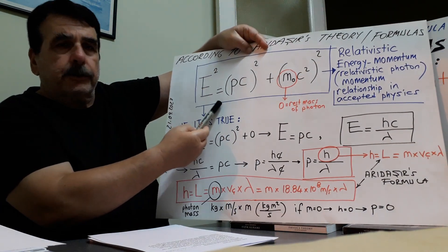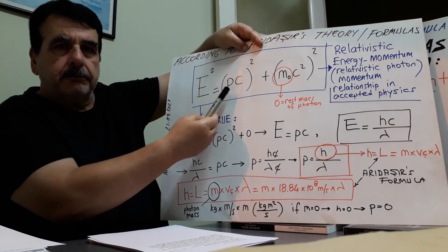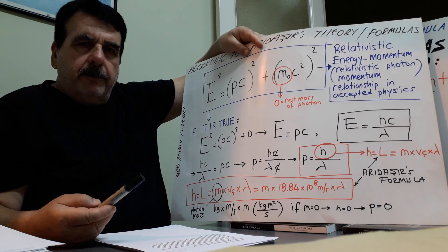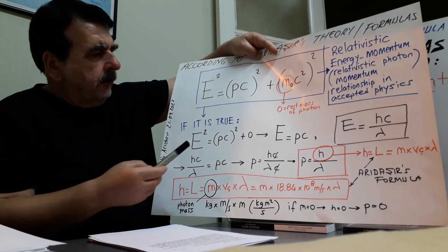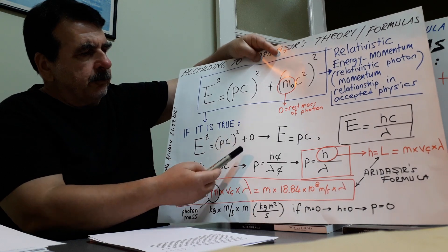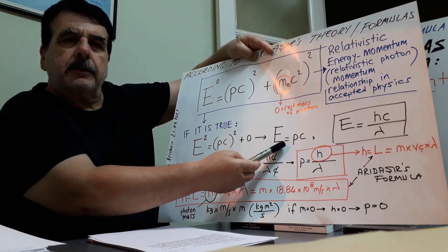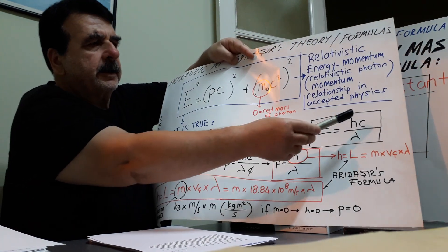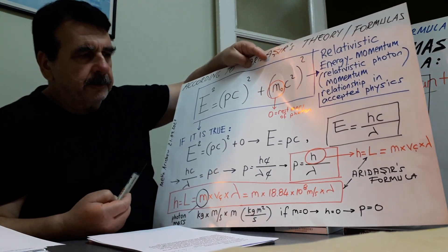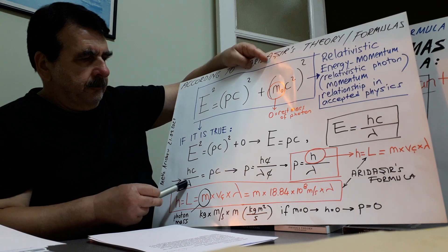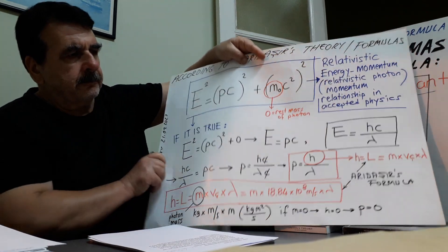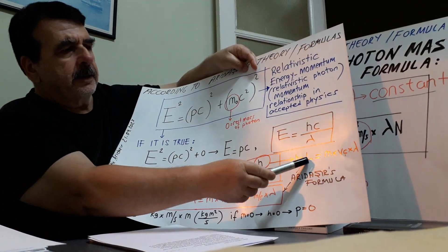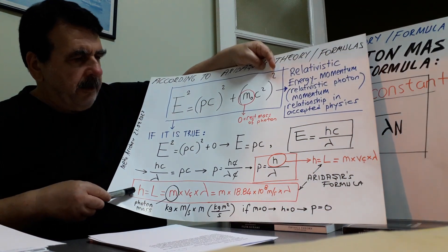If it is true, if there is momentum, I will check according to my theory and my formulas. E squared equals PC squared is equals to E equals PC. E is HC divided by lambda wavelength. As you see, finally, this is H, Planck's constant, according to my theory and my formulas.